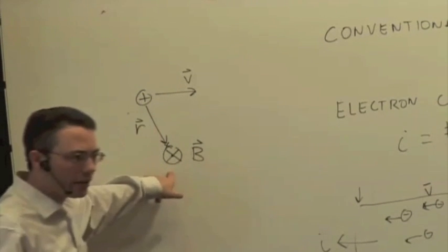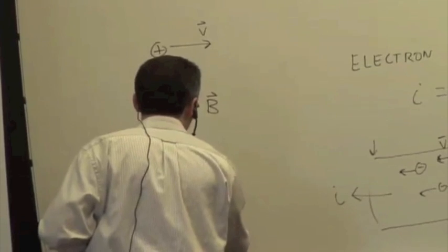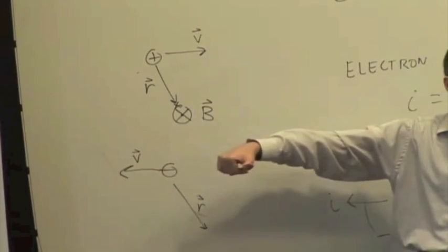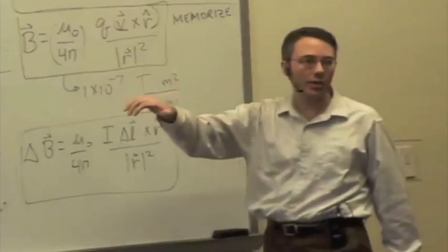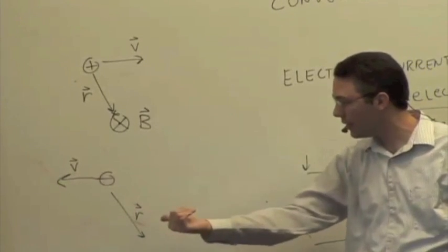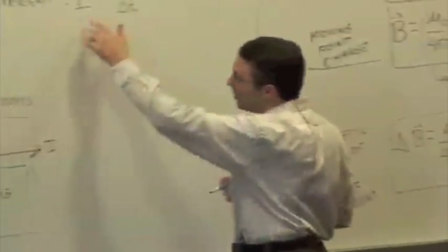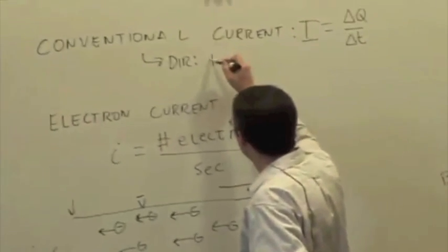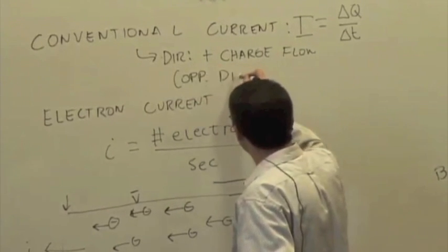If I have a negative charge moving in the opposite direction, the same observation location gives V cross R-hat pointing out, but then I multiply by a negative charge, which flips the vector direction. So V cross R pointing out, multiplied by the negative charge, gives a magnetic field that points in. Therefore, an electron current moving that way and a conventional current moving the other way give the same direction of magnetic field. By convention, conventional current direction is the direction of positive charge flow, which is opposite to the electron current direction.